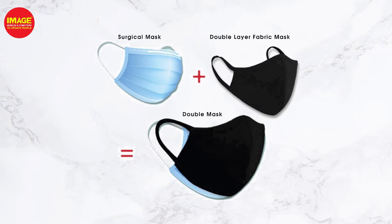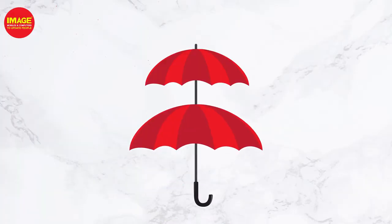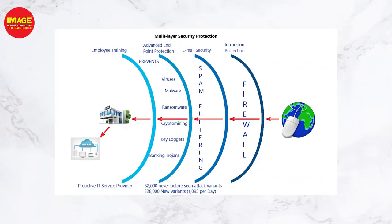When you are dealing with something like corona, you need to use double masks — that's the concept of layer protection. You need to know how to use multi-layer protection for your computer. If you have protection from multiple layers, you can protect your computer. That's why anti-virus software has multi-layer protection.